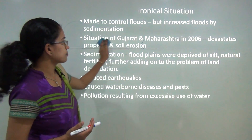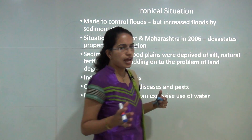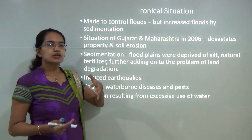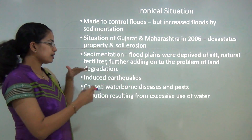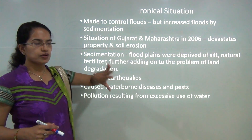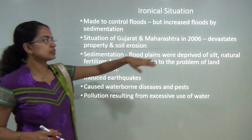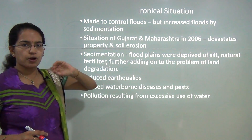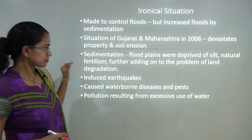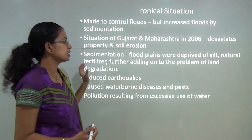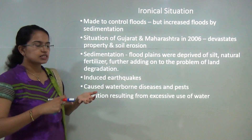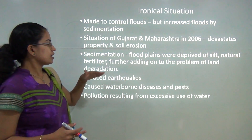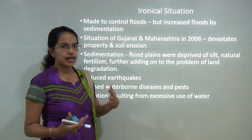The most ironical situation is that these dams were predominantly built to control floods. However, with the building of dams, the problem of floods further aggravated because water is bounded to a limited area. In 2006, Gujarat and Maharashtra faced severe drought, leading to devastation of property and soil erosion. Sedimentation is a major concern — flood plains are deprived of silt, and fertilizers being added wash off into the water creating pollution. Seismic activities are induced, and waterborne diseases and pest infestation commonly occur near dams.